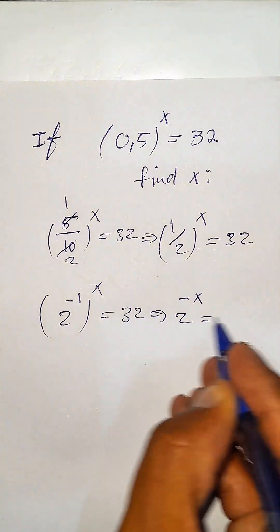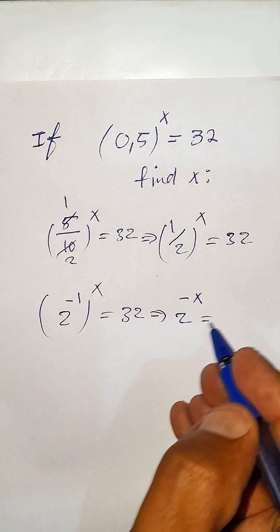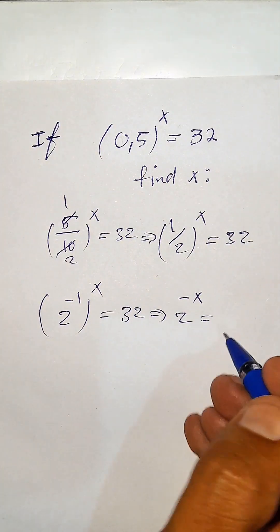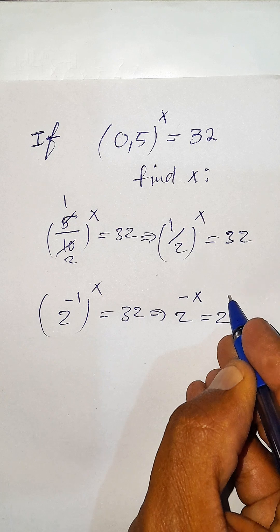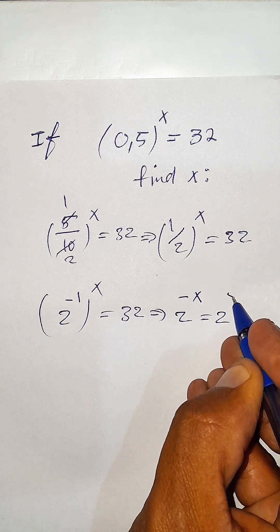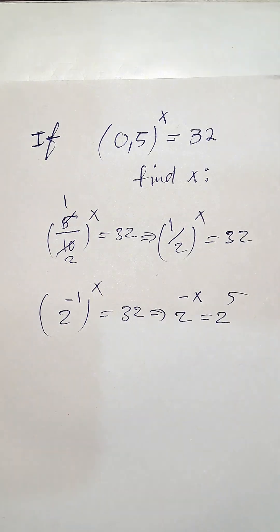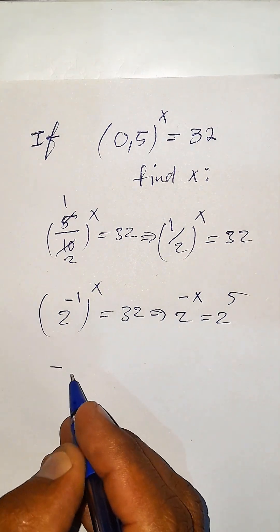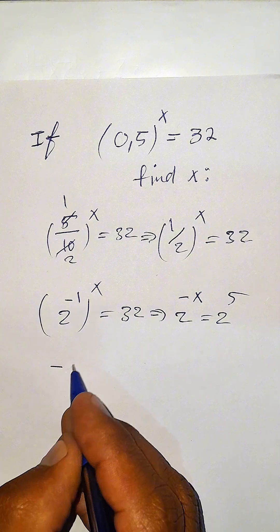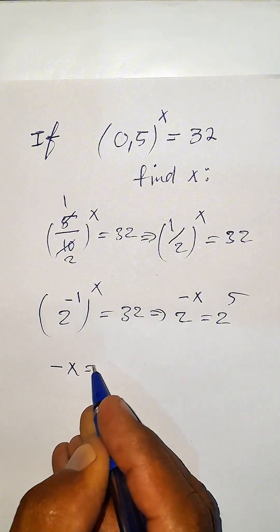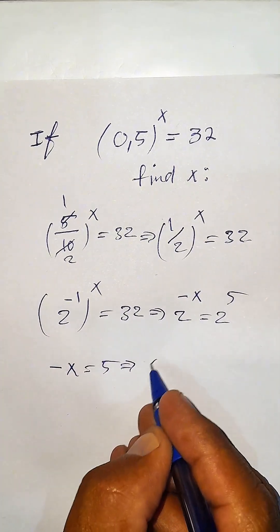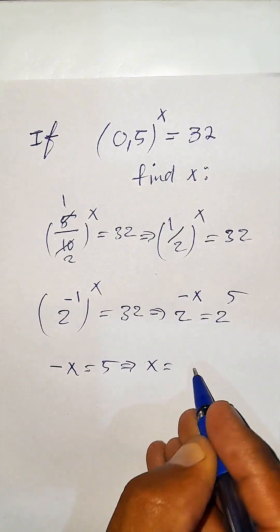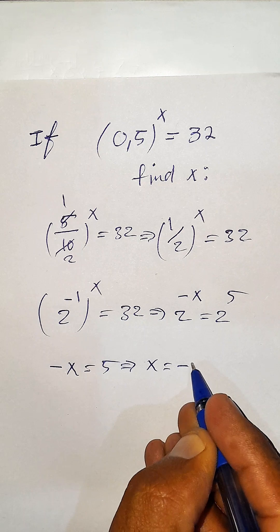And this equals to — instead of 32, it can be written as 2 to the power of 5. And now, minus x equals 5, so x equals minus 5.